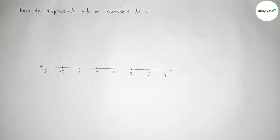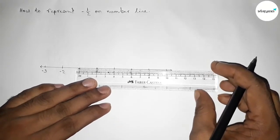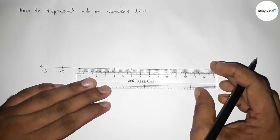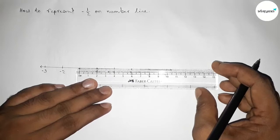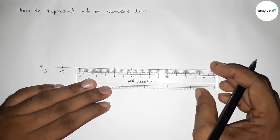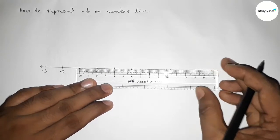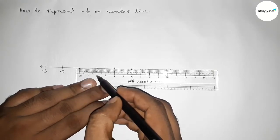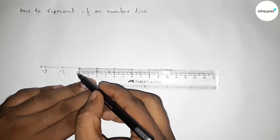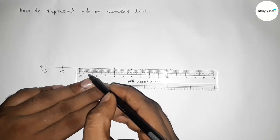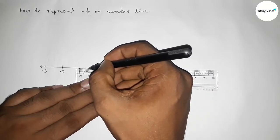Now we have to represent minus 1 by 2. So the value of 1 by 2 is between 0 to 1, so here we have to represent minus 1 by 2, which will be between 0 and minus 1, and the half between 0 to minus 1 here will be this. This is the middle between 0 and minus 1.